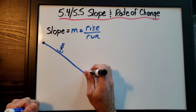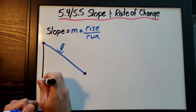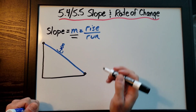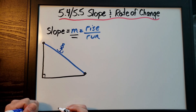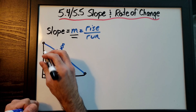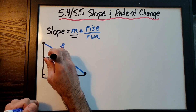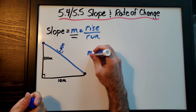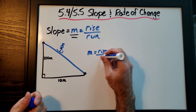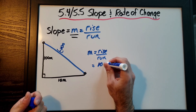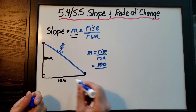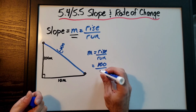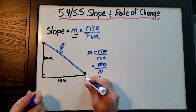Slope is rise over run — how much from one point to another does the line rise, and how much does it run. For example, if a slope goes up 100 meters and across 10 meters, slope equals rise over run. We rise up and down, and we run side to side — that's why it's called rise over run. It's always y over x.